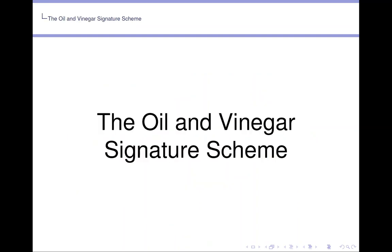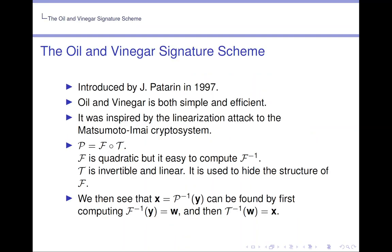The oil and vinegar signature scheme. The oil and vinegar signature scheme, which is the inspiration for the scheme that we are attacking, was introduced by Patarin in 1997. Oil and vinegar is both simple and efficient. It was inspired by the linearization attack to the Matsumoto-Imai cryptosystem. Here the public key P is the composition of two maps, F and T. F is quadratic but it is easy to invert, and T is an invertible affine map used to hide the structure of F.